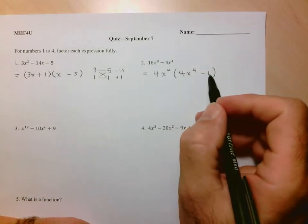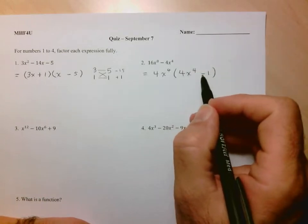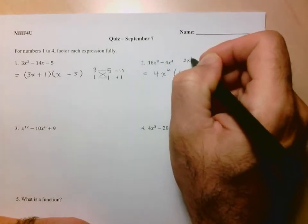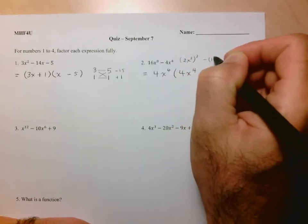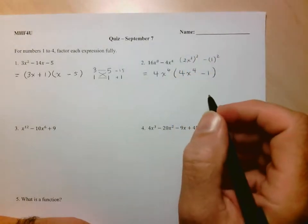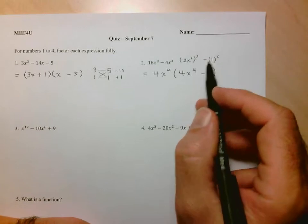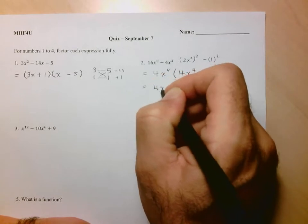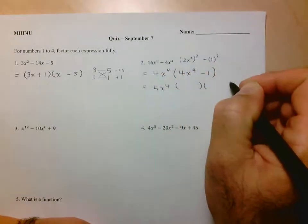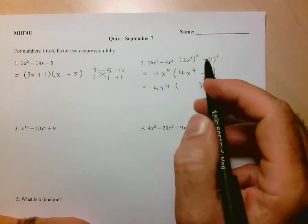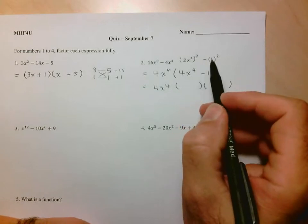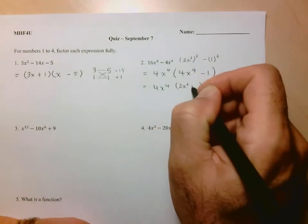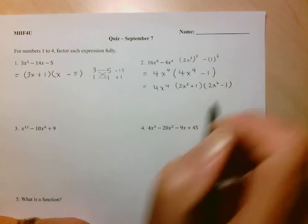And what we have left for x to the 4 minus 1 is much simpler to work with. Now of course, you look at this here, and I hope that you're recognizing this as a difference of squares. So this is like 2x squared squared minus 1 squared. Again, I wouldn't normally expect you to write this down. This is more for people who might still be struggling with these.